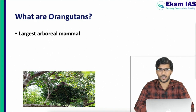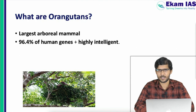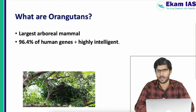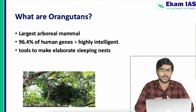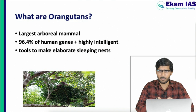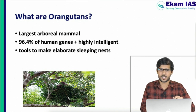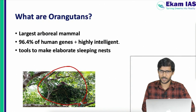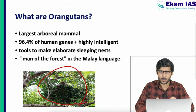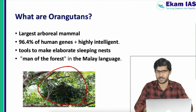Orangutans are the largest arboreal mammals — arboreal means tree-loving or tree-living mammals. They mainly live on trees and rarely come to the ground. 96% of human genes have similarity with Orangutans, and they are highly intelligent species capable of making sophisticated tools, such as sleeping nests. The term Orangutan means 'man of the forest' in Malay language. They are also called gardeners of the forest because they help in seed dispersal.